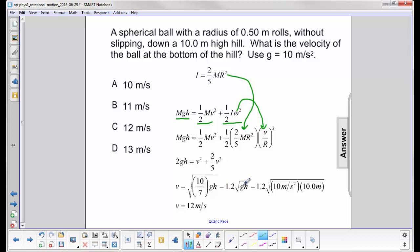That's 1.2 times the square root of gh. I put in my values and I get the velocity at the bottom of the hill is 12 meters per second.